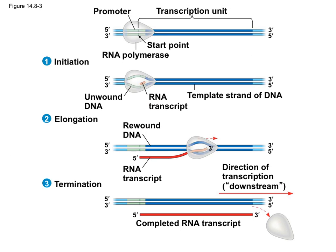Here's the basic graphic of transcription. This is your RNA polymerase, and here's the promoter region that tells RNA polymerase where to start. There's a specific start point — a particular sequence where the RNA nucleotides start getting added. RNA polymerase pulls open the DNA, unwinds it, and starts adding RNA nucleotides. This is initiation: the opening and adding of the very beginning of the RNA nucleotides.